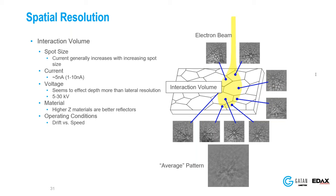Question: Are there any efforts in machine learning for predicting properties of grains? Yes, there have been some studies. There's also been machine learning applied to phase identification — essentially extracting the Laue group from patterns without any prior knowledge. Machine learning is starting to be applied but is not yet routine. Watch this space — I think we'll see more and more.